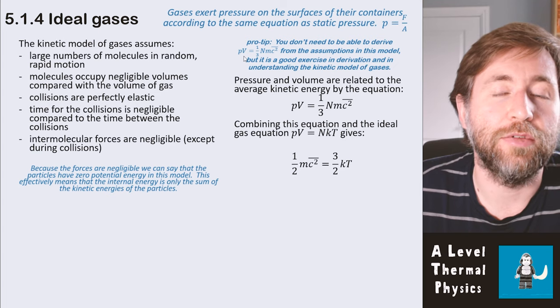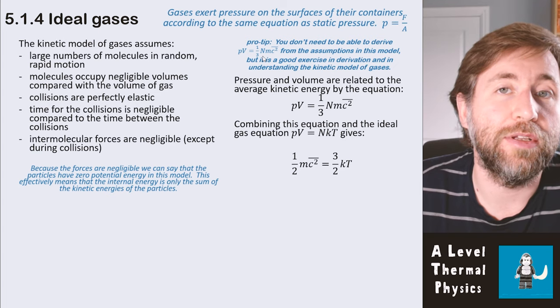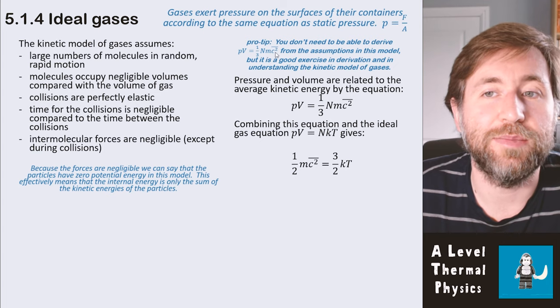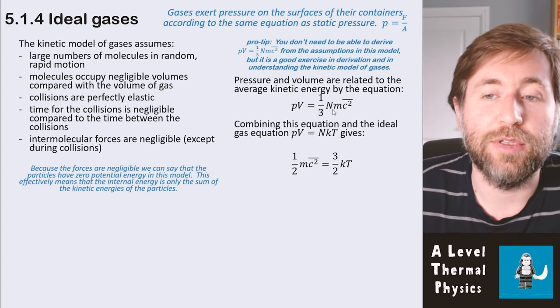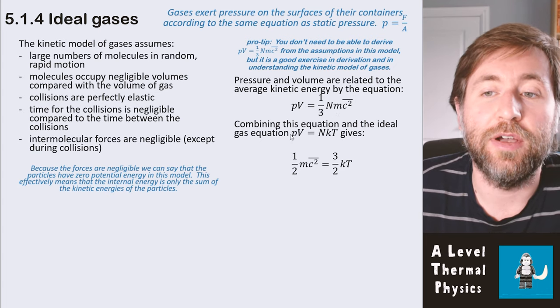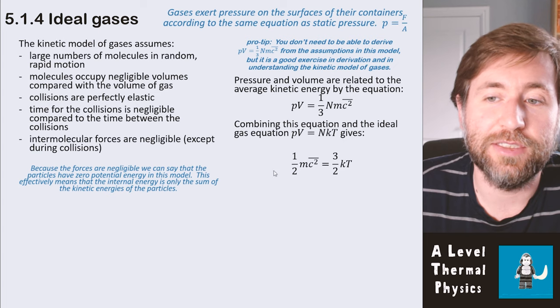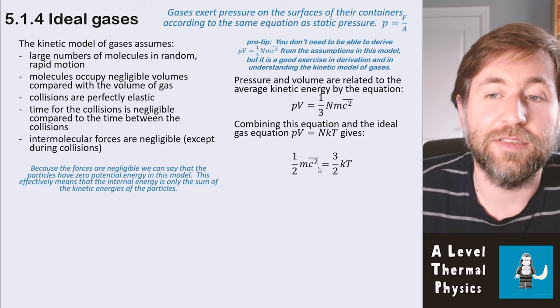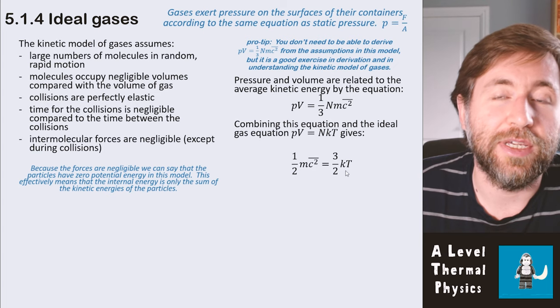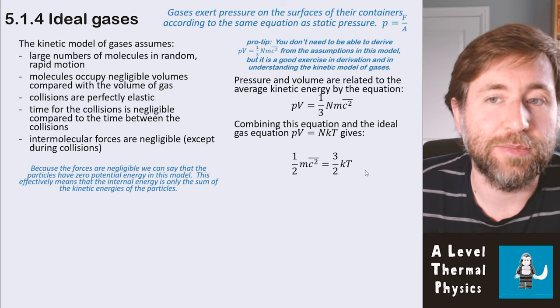So this states that pressure times volume is equal to a third multiplied by the number of particles times the mass of each particle times the RMS speed squared. Now we'll talk about RMS speed in just a moment, the root mean square speed. But you can combine this first equation with the ideal gas equation to give this. A half mc² squared.